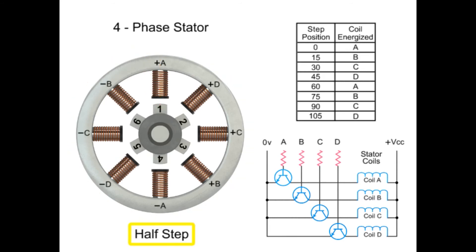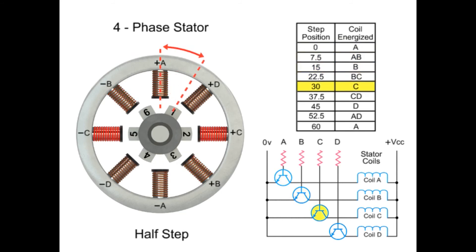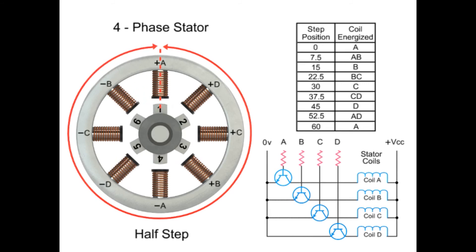For half-step mode, the stepper motor's resolution can be doubled by altering the switching of coils. Half-stepping occurs when one winding is energized and then two windings are energized alternately, causing the rotor to rotate at half the distance. Switching coils in this combination will rotate in the reverse direction. As you can see in this example, 48 steps are required to make a full rotation at 7.5 degree increments.